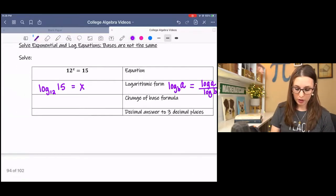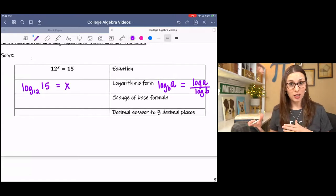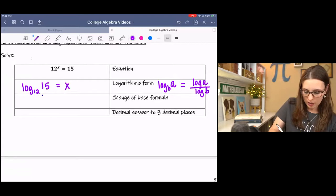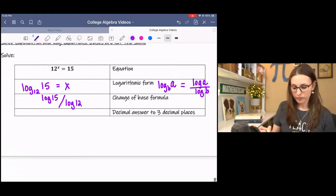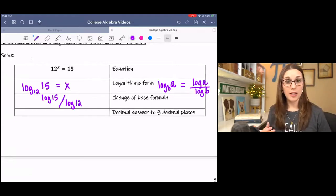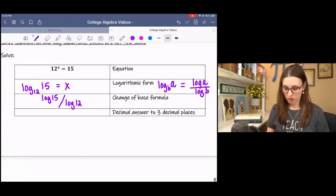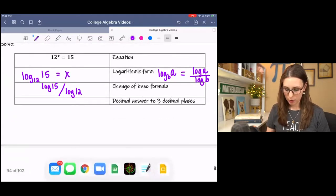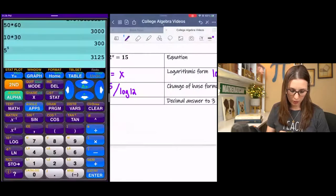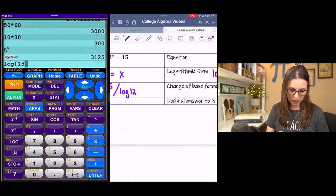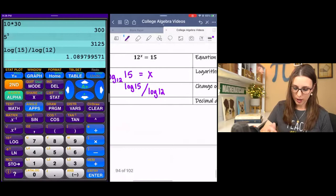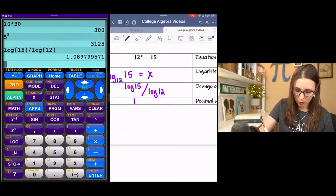So that's what I have here. I have x is isolated, but then I have this thing that I can't type into my calculator. But what I can type in is log 15 over log 12. That would be your exact answer. And then if you wanted the rounded answer, you would pull up your calculator. And you would type in log 15, close the parentheses, divide it by log 12, close the parentheses. And we get about 1.08.